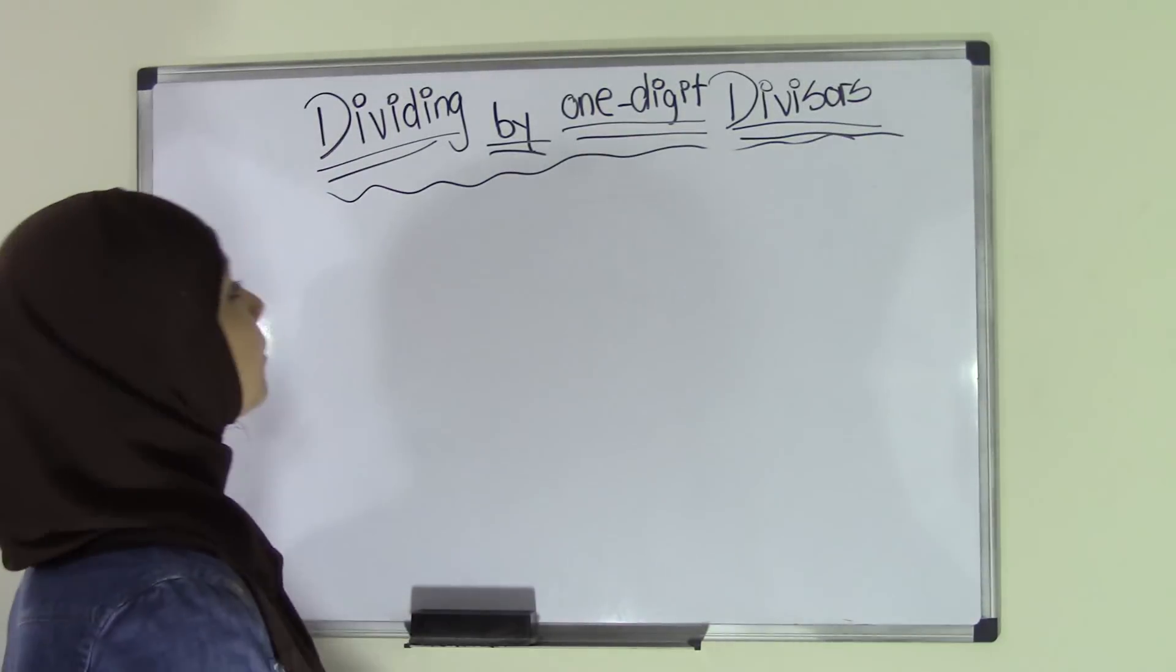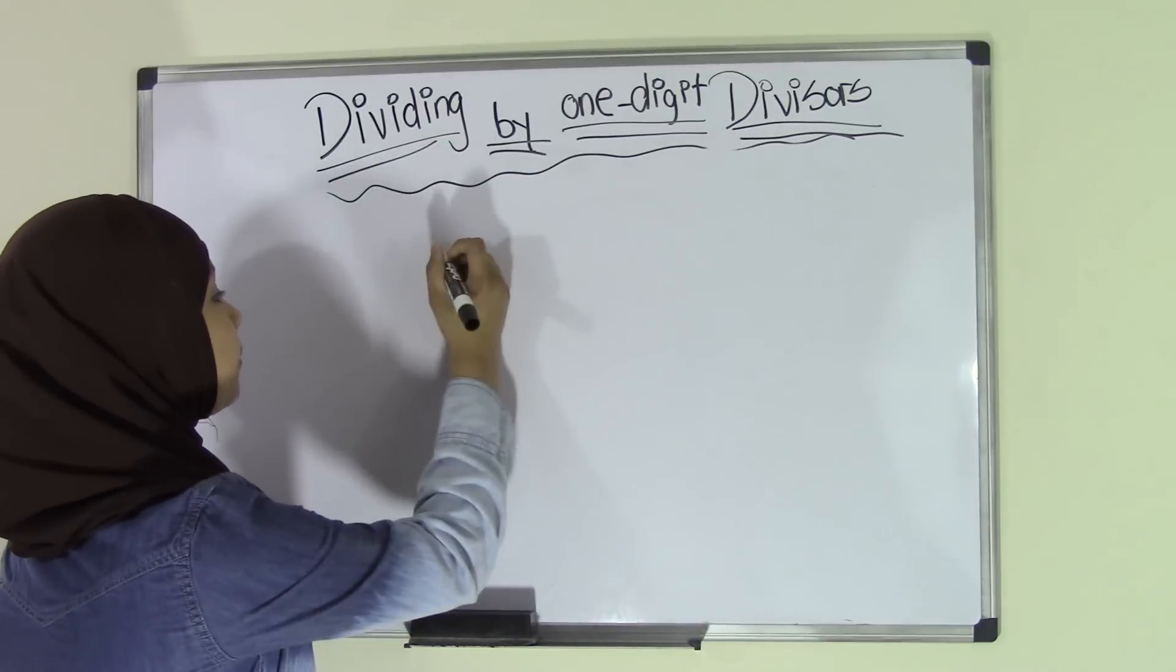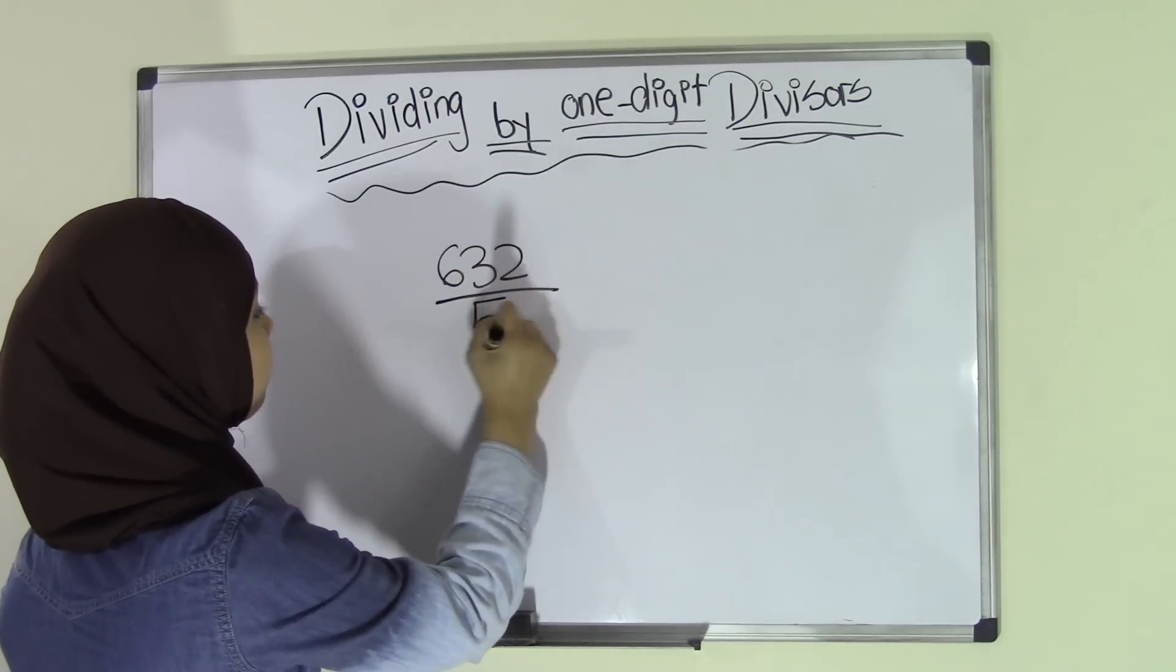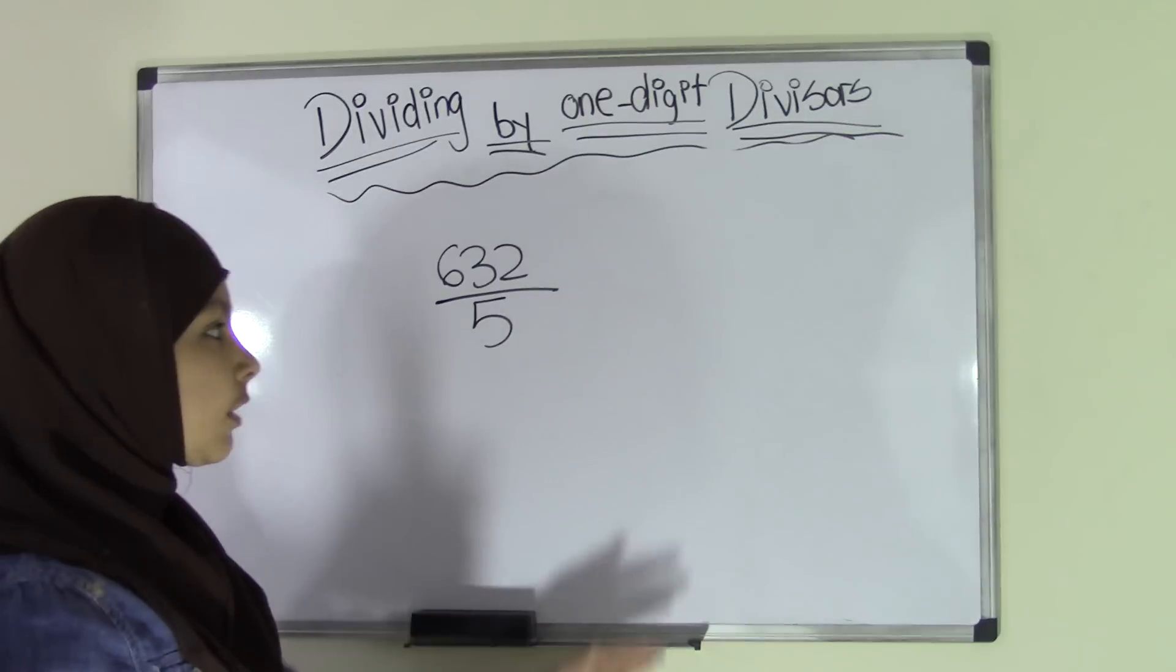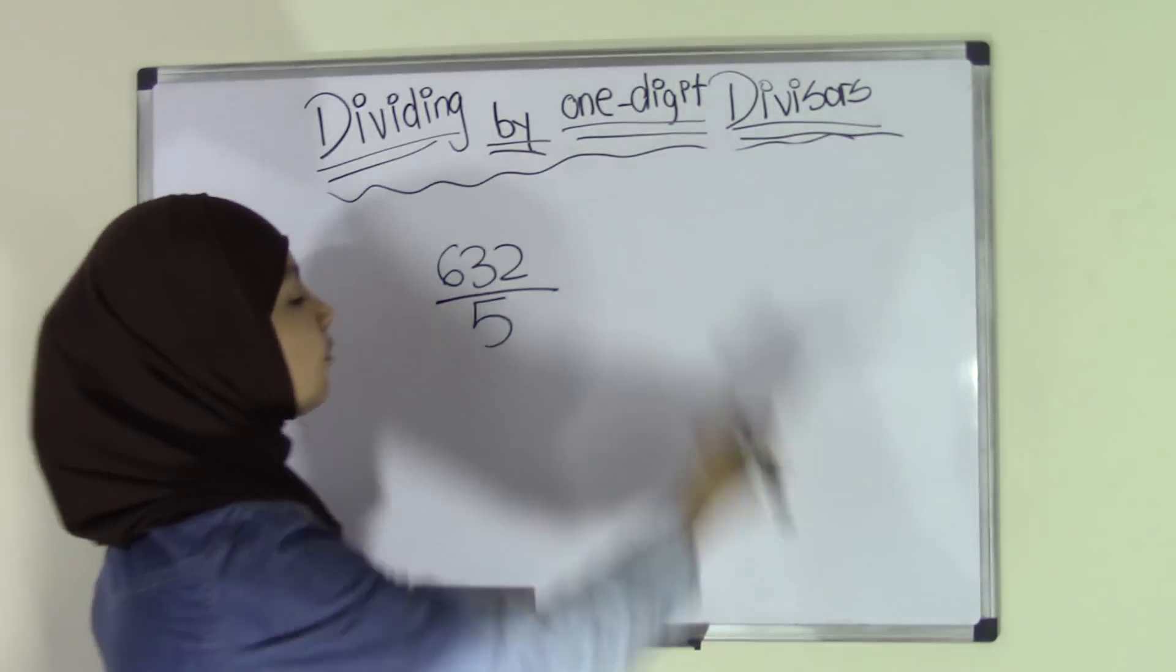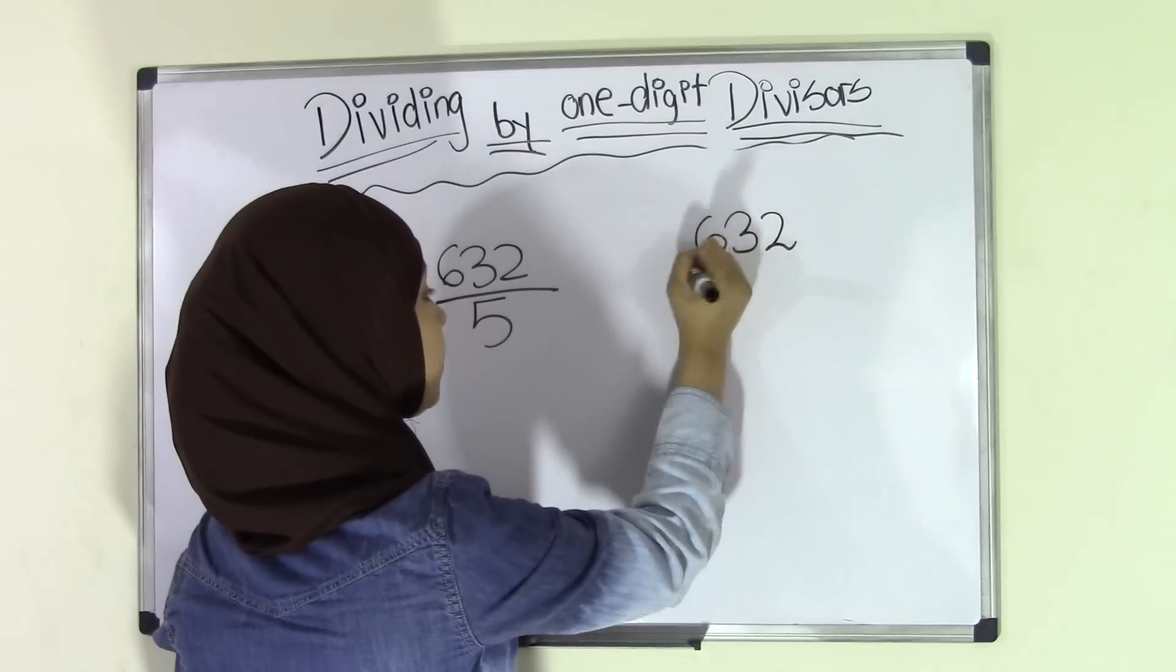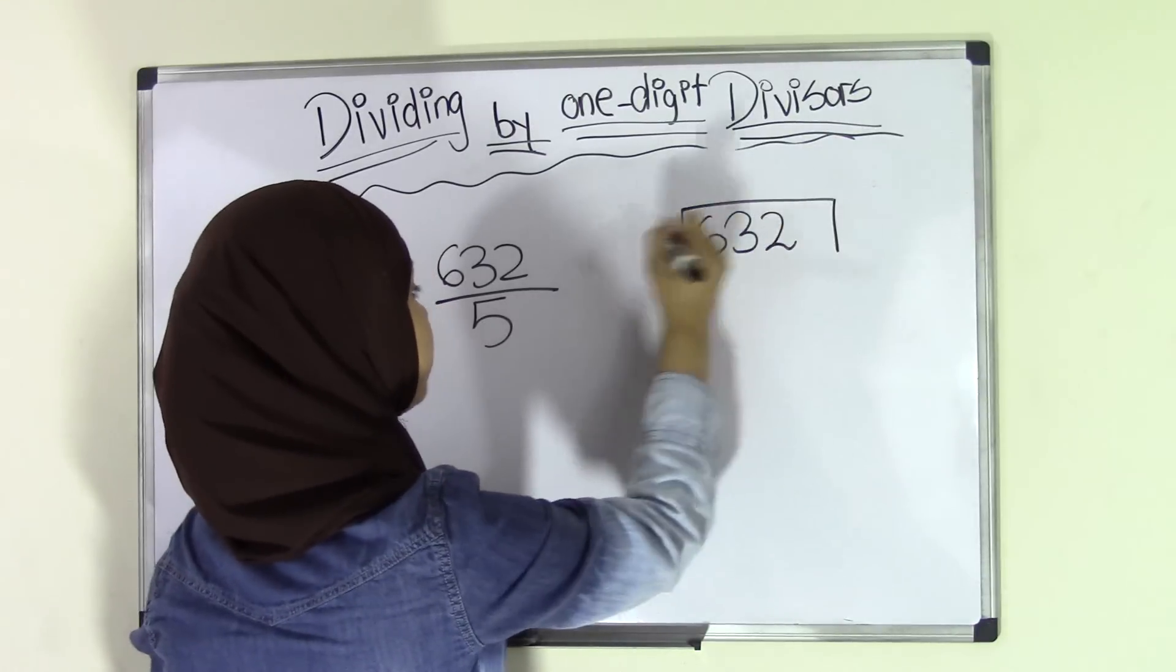So let's take a look at an example here. For example, if we have 632 divided by 5, first thing you're going to do is you're going to write this here in division form. So 632 divided by 5.